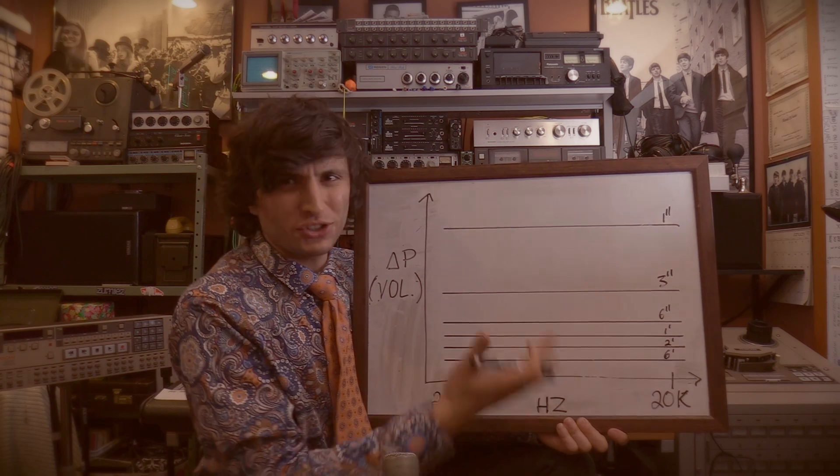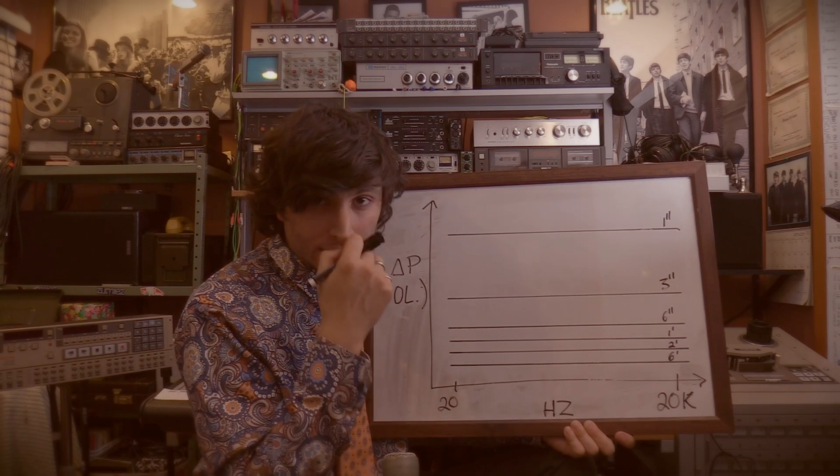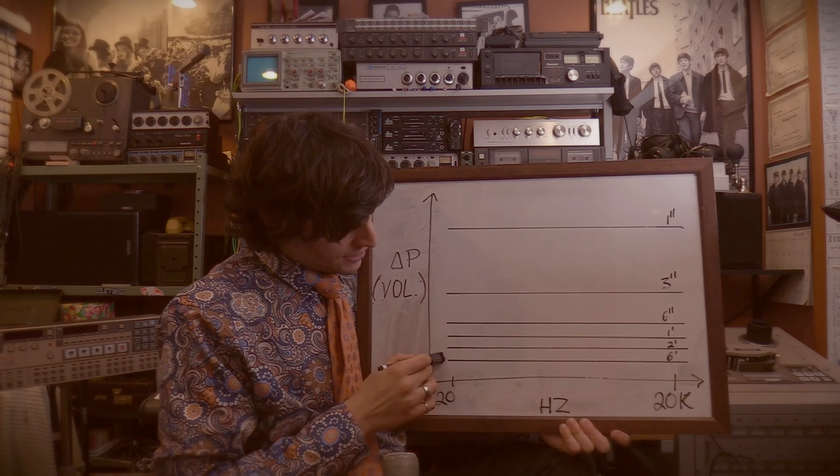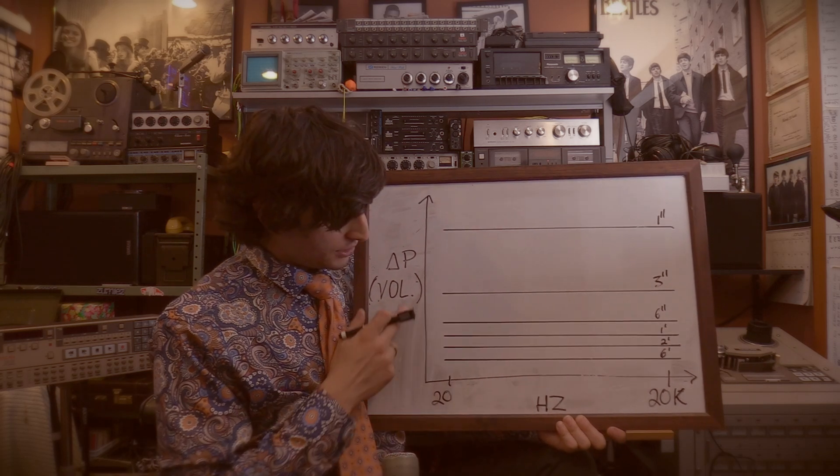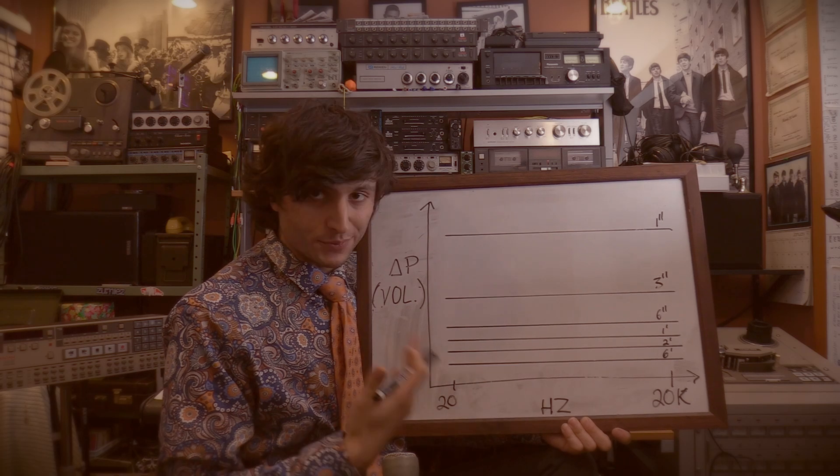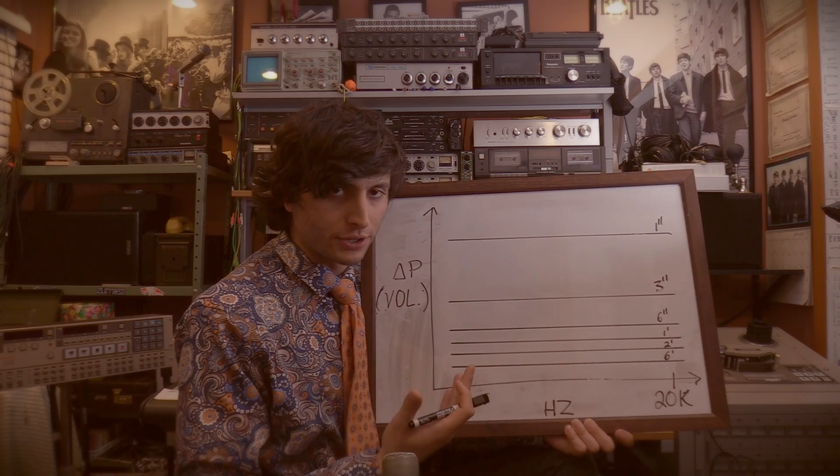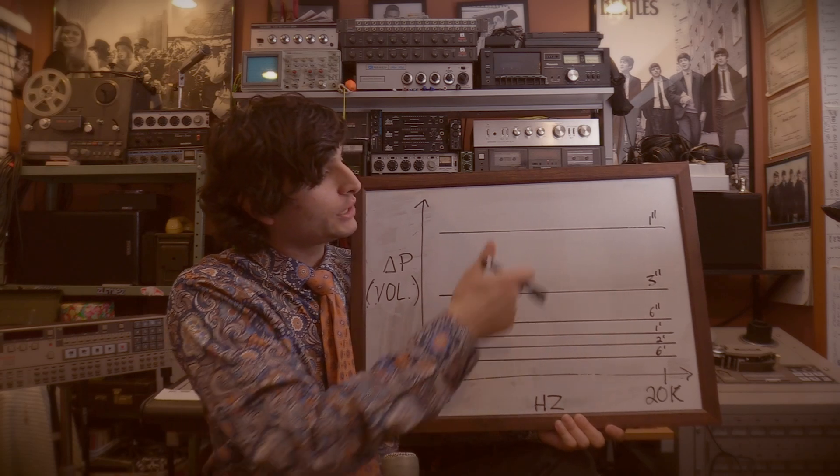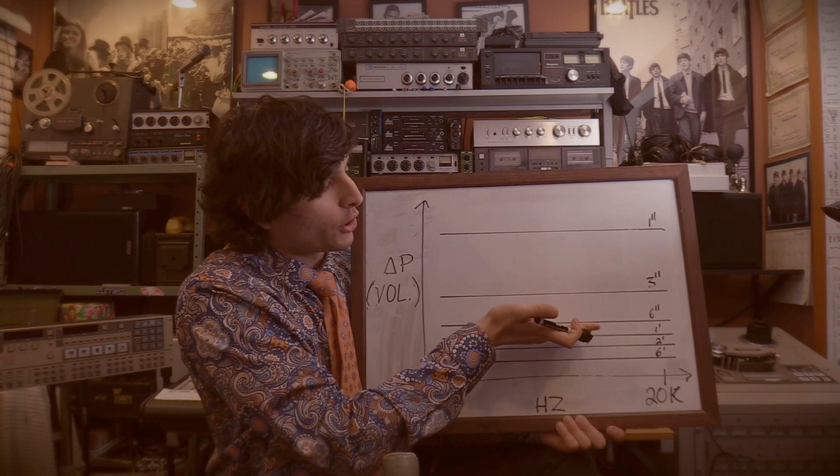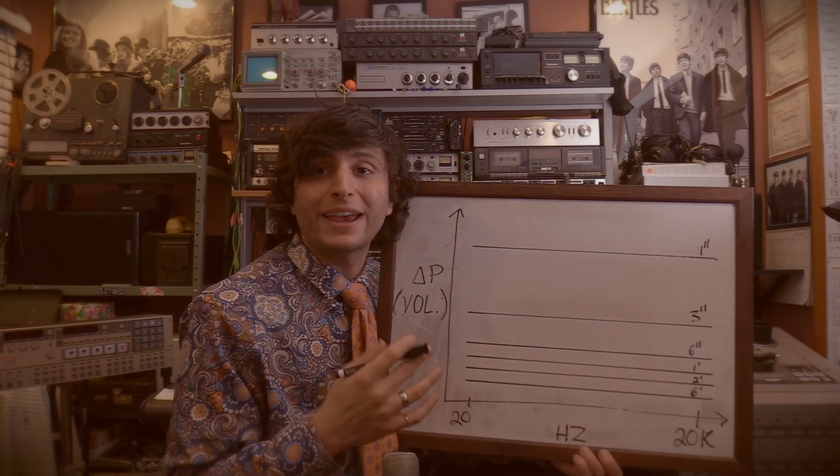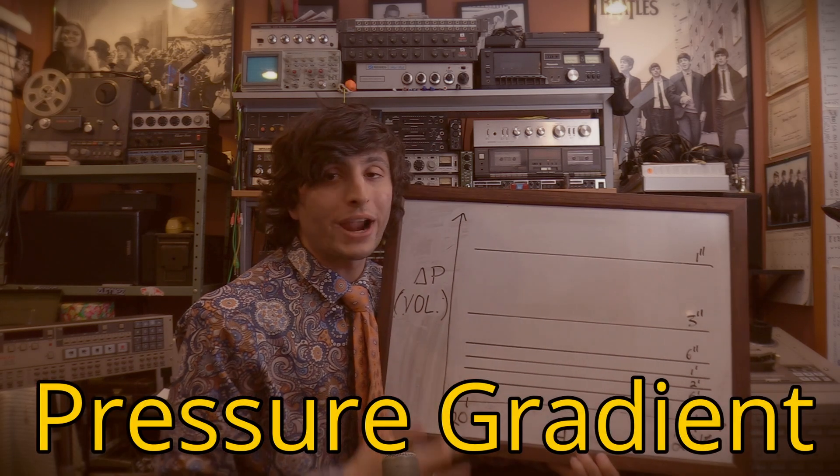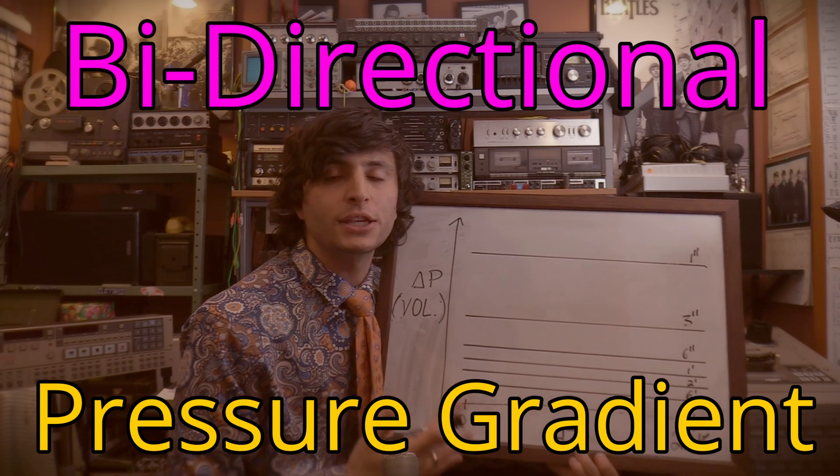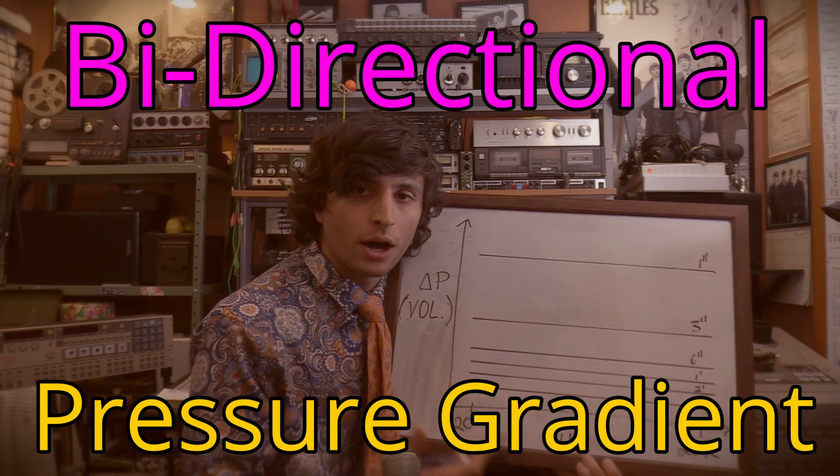And as you can see, once you get away from close micing a signal source, the inverse square law barely has any influence on the change in pressure and subsequently the volume that the microphone is going to be producing. It is really only crucial for when you are close micing.